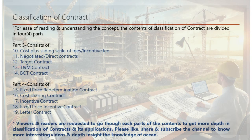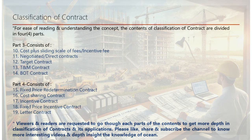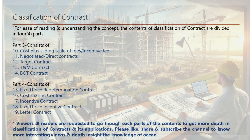Part four will conclude with: 15. Fixed-price redetermination contract — price is fixed but can be adjusted based on predefined criteria. 16. Cost-sharing contract — both parties share costs and savings according to an agreed formula. 17. Incentive contract — additional payments if the contractor meets or exceeds performance targets. 18. Fixed-price incentive contract — a fixed price with additional incentives tied to specific performance metrics. 19. Letter contract — a preliminary agreement allowing work to begin before the full contract is finalized. Your support by liking, sharing, and subscribing will help us continue to bring you insightful content.